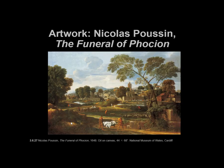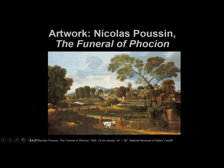Landscape becomes very popular because if you're going to sell things to regular wealthy people — not the Pope, not the King — they want things for their houses. They might want some landscapes. Poussin had a recipe: he liked to frame his paintings with trees on the sides like parentheses, then move everything from right to left into the landscape, using atmospheric perspective and some linear perspective.